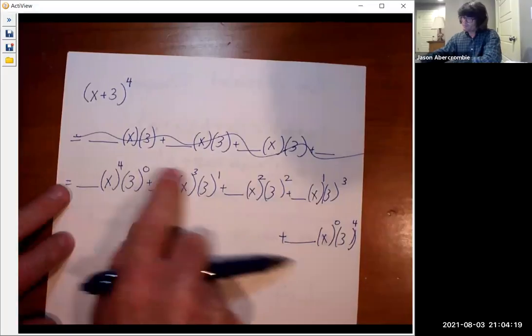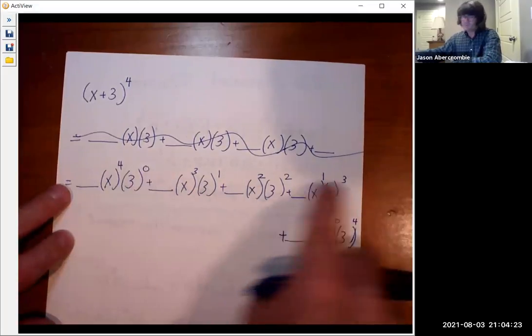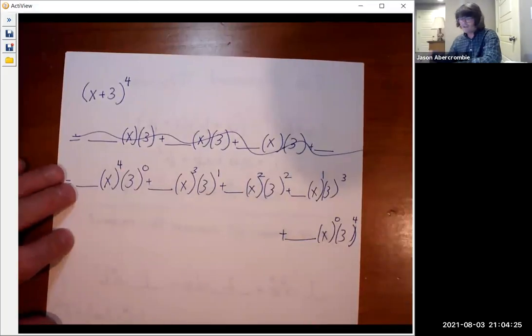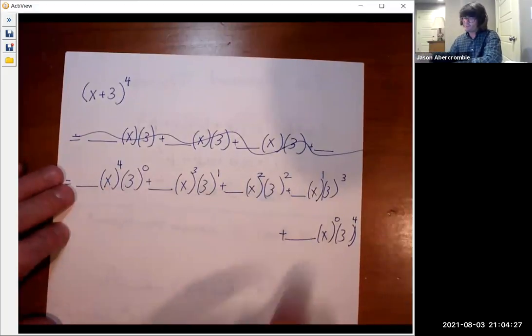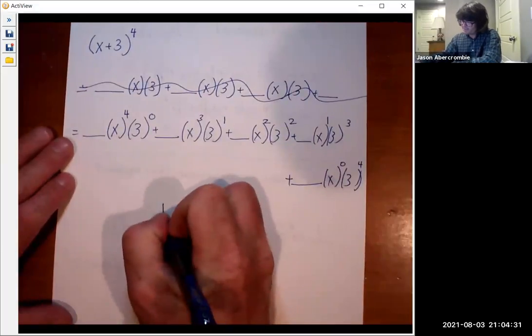So look, x went 4, 3, 2, 1, 0. And then 3 went 0, 1, 2, 3, 4. So now we need five coefficients. One, two, three, four, five. We'll do this with Pascal's triangle first and then I'll do it with the calculator.